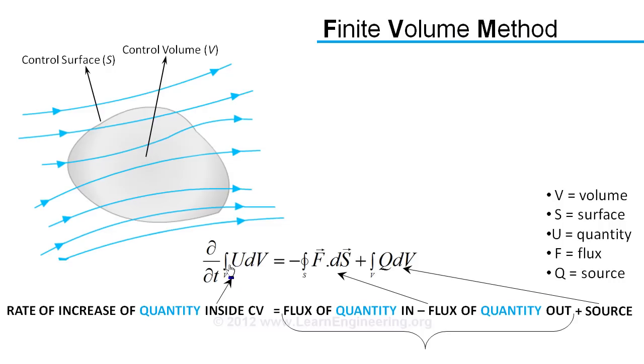So I can apply this general form to mass, so U will be density times velocity. It will lead to conservation of mass equation.